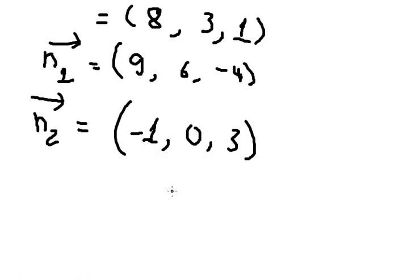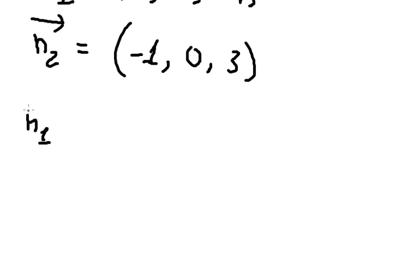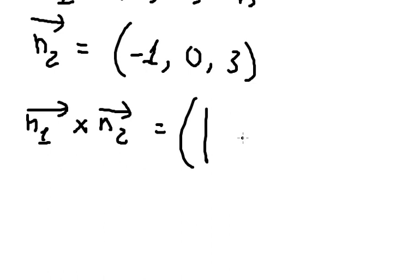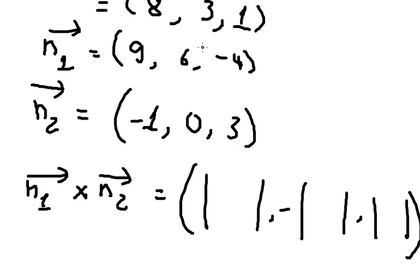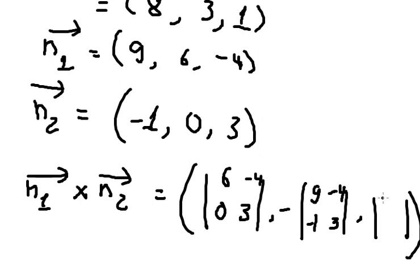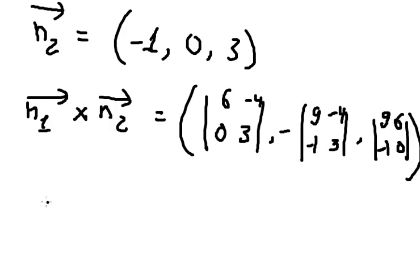After we have everything, we can find the cross product. For the x-component, we concentrate on (6, -4, 0) and (3). For y, we have (9, -4, -1) and (3). And for z, we have (9, 6, -1, 0).